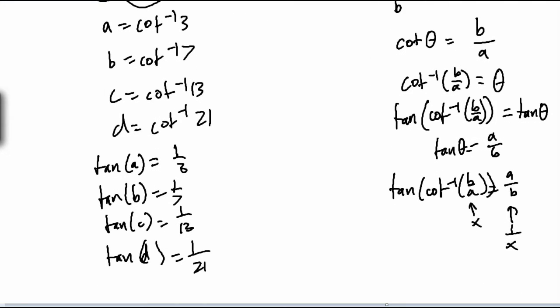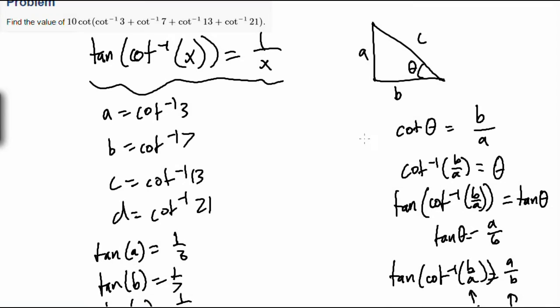You might be asking, where the heck do we go next? Well, the problem is asking us to find 10 cotangent of A plus B plus C plus D. However, notice that cotangent of A plus B plus C plus D is actually equal to 1 over tangent A plus B plus C plus D.